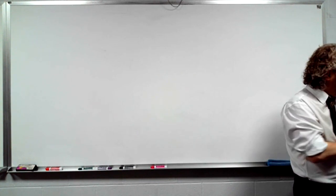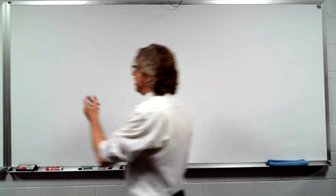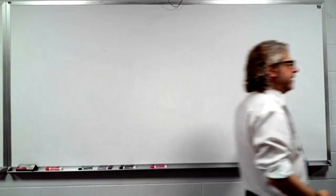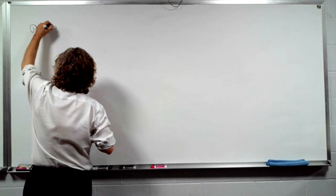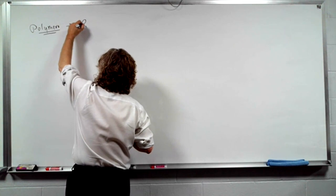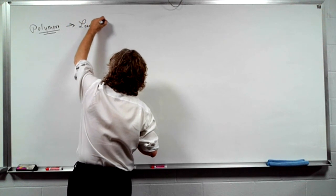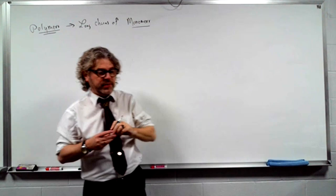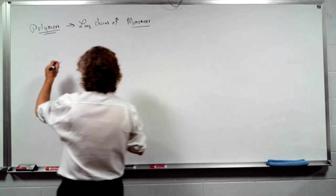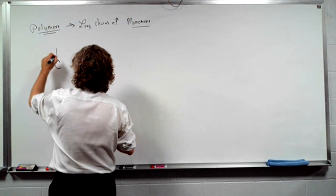This chapter is called plastics or polymers, chapter 10 in your text. What are polymers? They're long chains of monomers, something that repeats over and over. Remember, carbon has four bonds.